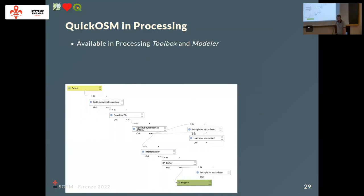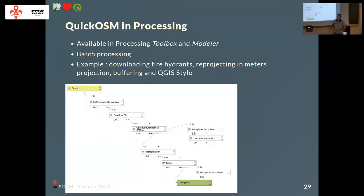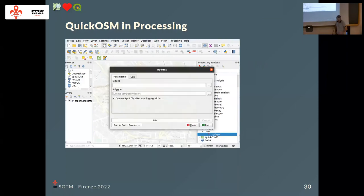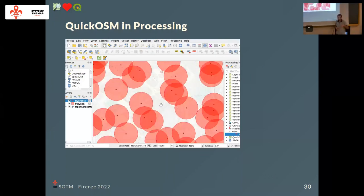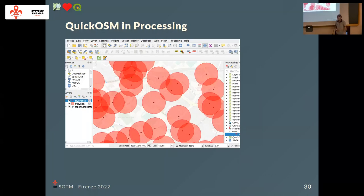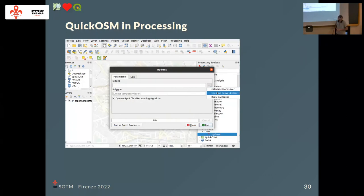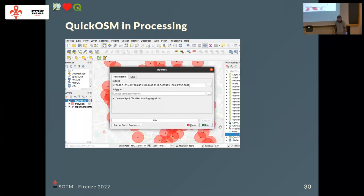QuickOSM also supports the QGIS processing model builder, where you can chain different processing algorithms into a more complex model. For instance, you could set up a model to download fire hydrants, reproject into meters, then buffer 100 meters around the fire hydrants. QuickOSM can be included in a QGIS processing model — in the final model you only specify the extent you want to download, and everything is already set up to download fire hydrants and apply the 100-meter buffer.